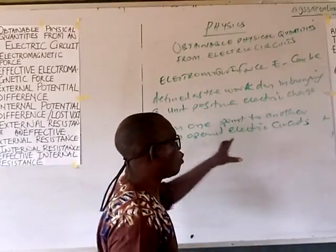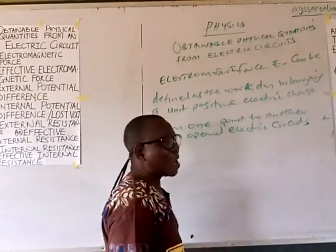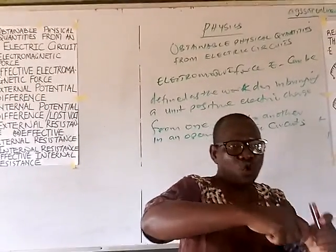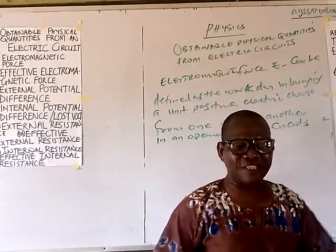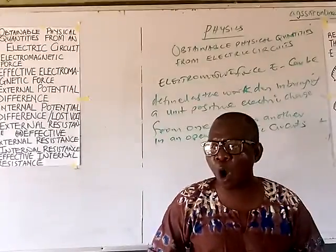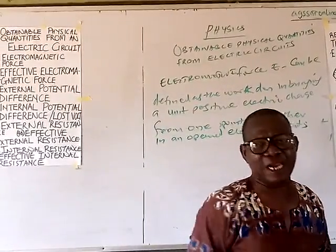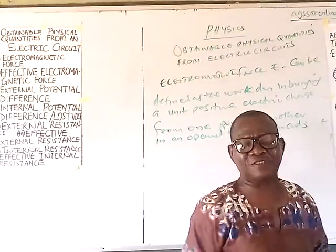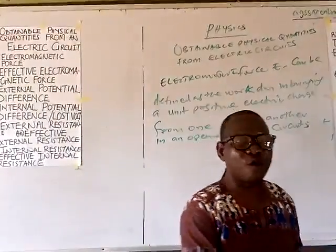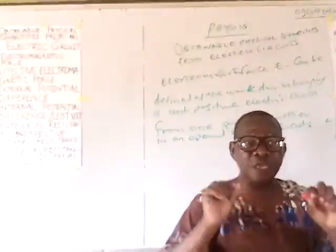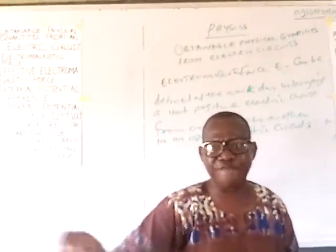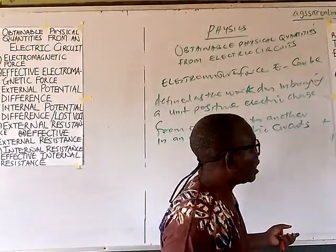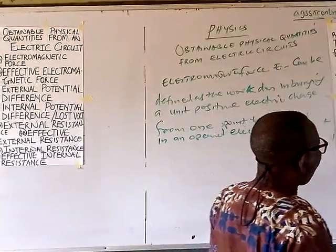The most important part of that definition is 'open electric circuit.' The circuit is open when you remove the plug or key. In other words, the manufacturer of the cell already puts the value beside the cell — that value is known as the electromotive force, which is the value before the cell starts delivering current to the circuit.